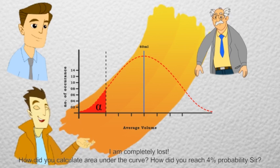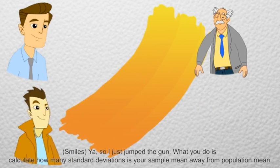I am completely lost. How did you calculate area under the curve? How did you reach 4% probability, sir? Yeah, so I just jumped the gun.